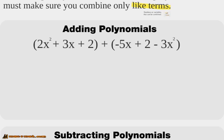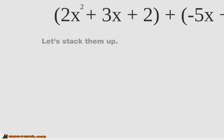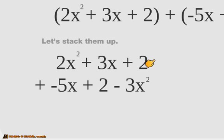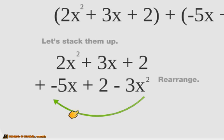Let's talk about how we add polynomials. We have 2x squared plus 3x plus 2, and we add that together with negative 5x plus 2 minus 3x squared. The first thing we do is stack them up — stack up addition, stack up subtraction — that's going to be the easiest way. So we put them on top of each other: 2x squared plus 3x plus 2, and then we put the other equation on top. Now you'll notice the like terms are not stacked up on top of each other, so the next thing you have to do is rearrange — move the x squared terms, the x terms, and the constants together. This is called standard form: you put the greater-degree exponents up front and go down in descending order.